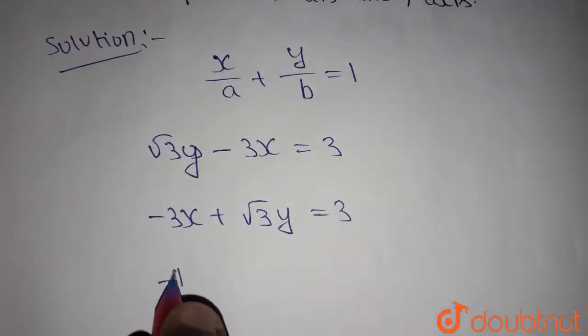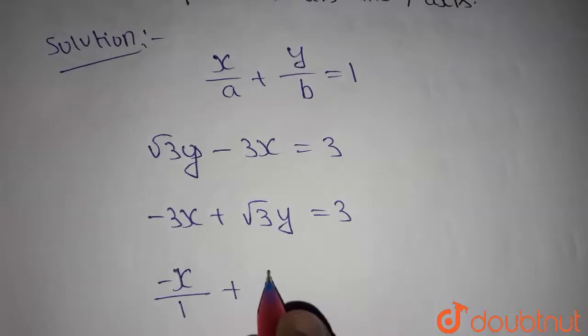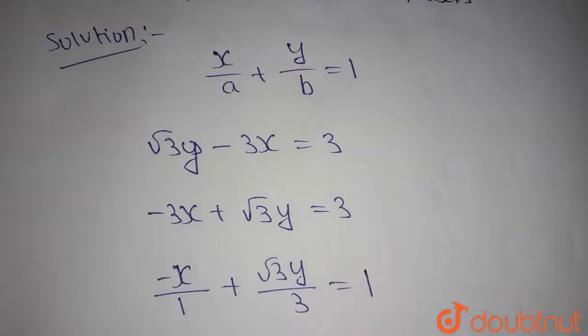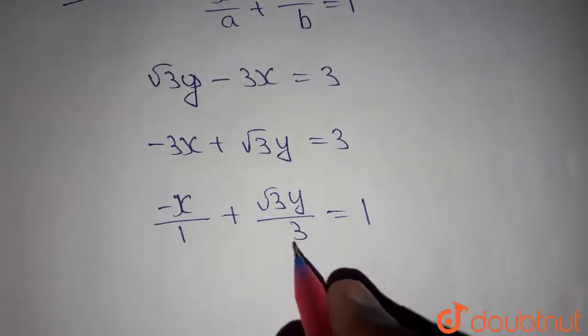Then we get minus x by 1 plus root 3y divided by 3 equals 3 divided by 3 which is 1. Now you can write 3 as root 3 into root 3.